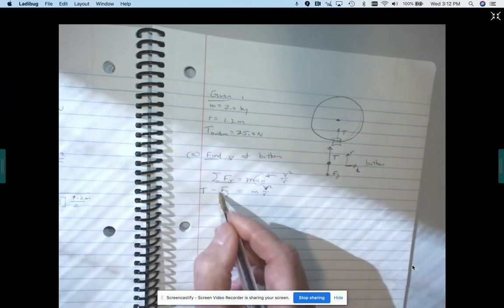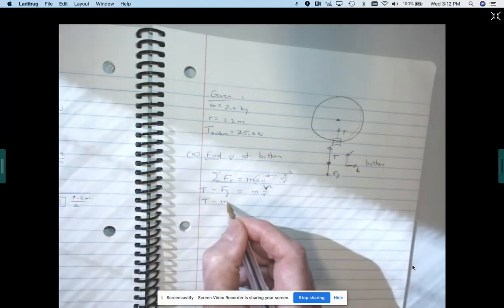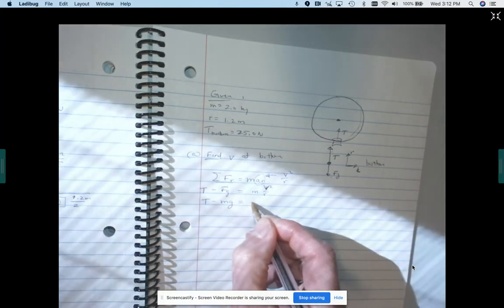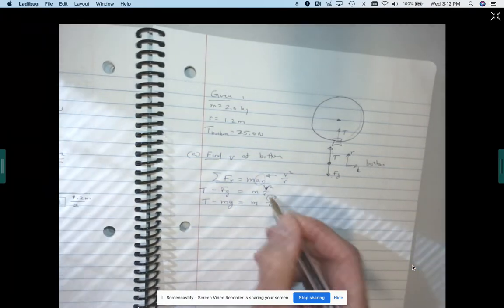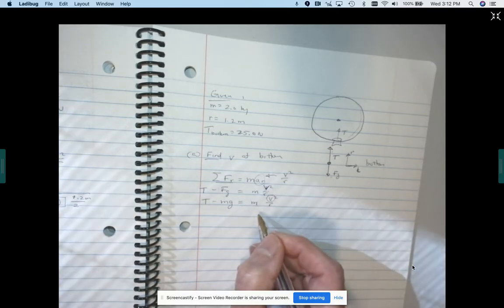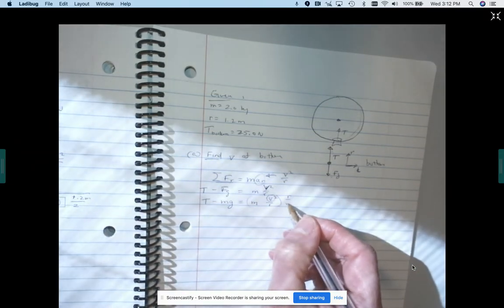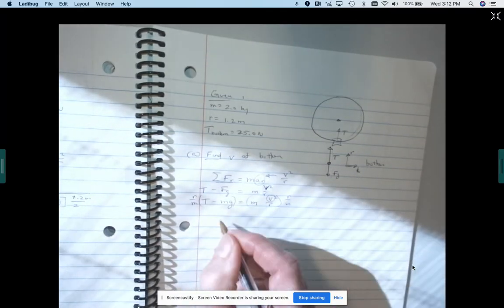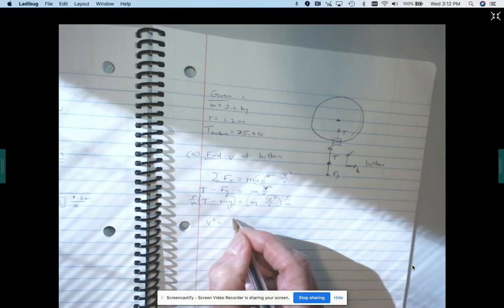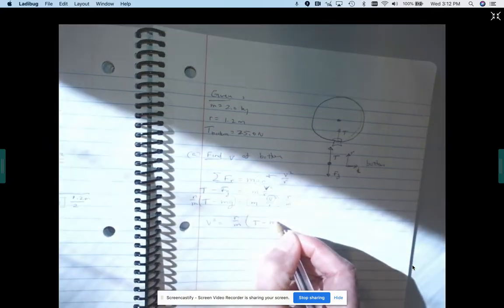And then, so we're going to solve for V, but we can first just plug in tension minus MG, right? That's our force of gravity at the surface of the Earth is M V squared over R. We want to solve for that. So we can multiply both sides by R over M. And then we'll just swap things around. So we get V squared is R over M times tension minus MG.